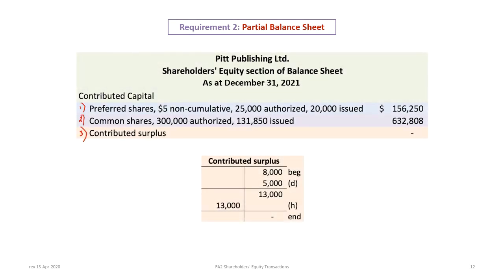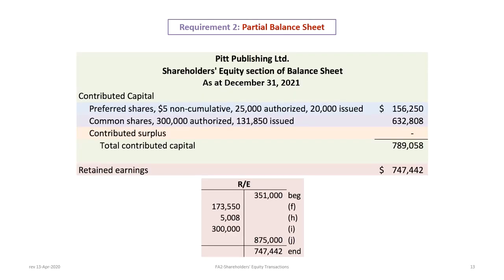Next is contributed surplus. The ending balance in contributed surplus is zero: we started with $8,000, added $5,000 from the forfeited share subscriptions, then removed the full $13,000. You don't need to show a zero balance unless presenting comparatives. Contributed surplus is part of contributed capital — a common student mistake is not including it properly. The subtotal for total contributed capital, combining preferred shares, common shares, and contributed surplus, is $789,058.